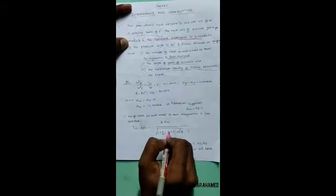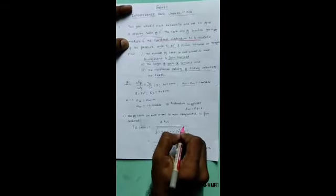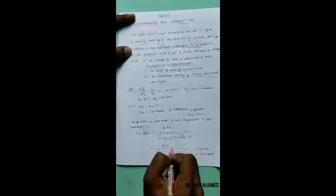The number of teeth on each wheel so that interference is avoided uses the formula: T_P equals 2 A_W divided by square root of [1 plus 1/G times (1/G plus 2) sin squared phi] minus 1. We know the remaining data.